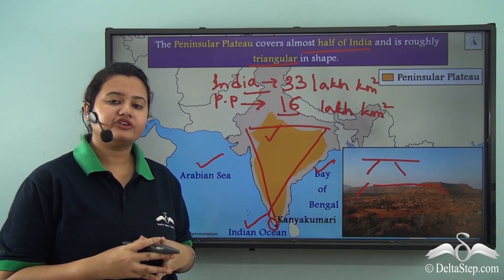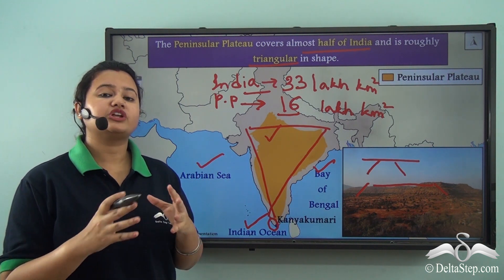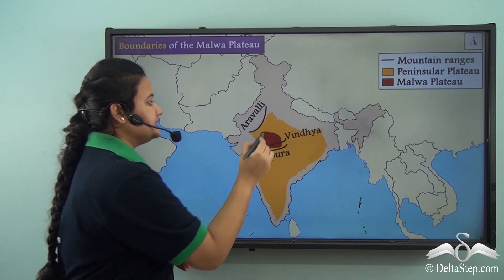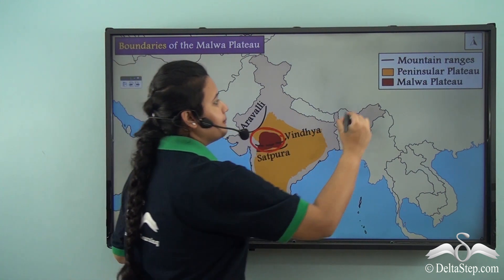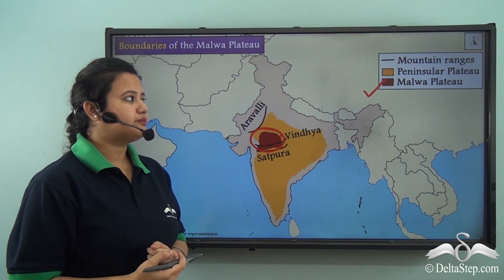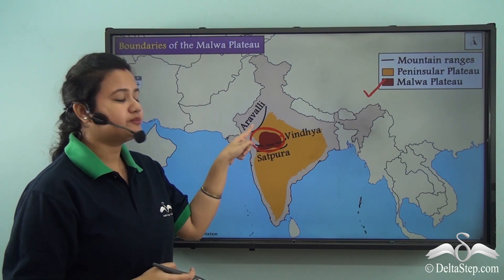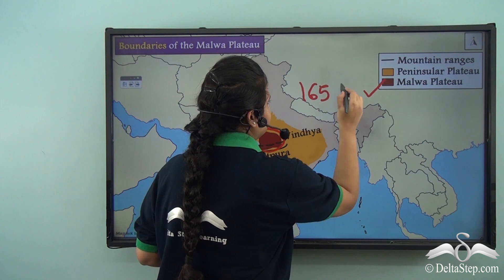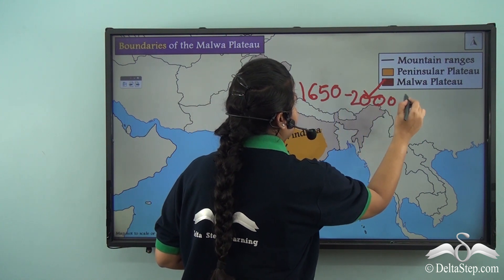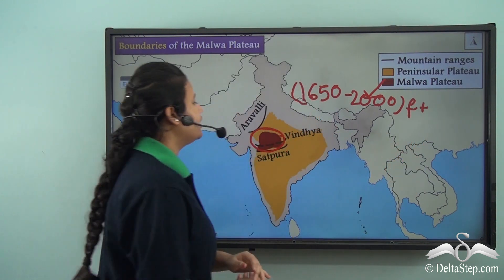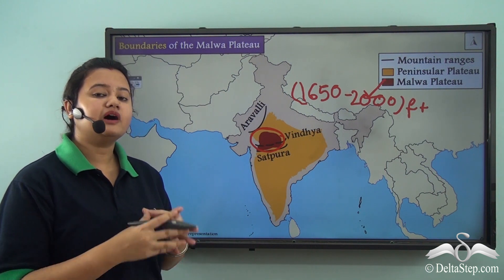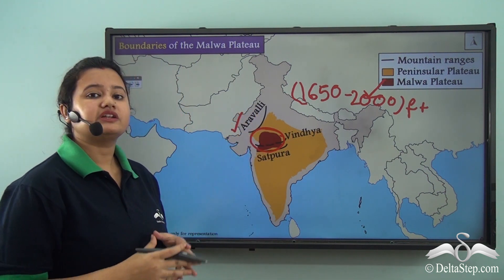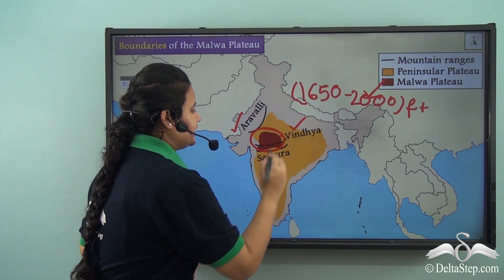This region can be further bifurcated into three smaller divisions, which we shall discuss individually. The division of the Peninsular Plateau present in the northwestern part is known as the Malwa Plateau. The Malwa Plateau has an average elevation of 1500 to about 2000 feet and is bounded by several mountain ranges — to the extreme northwest by the Aravali range, and to the south by the Vindhya range and the Satpura range.